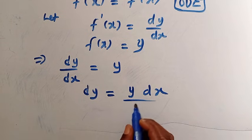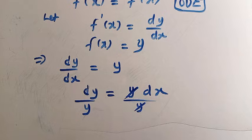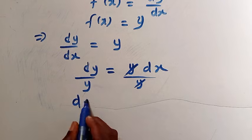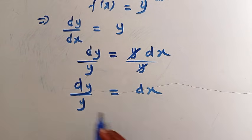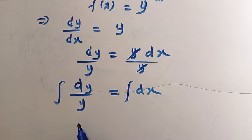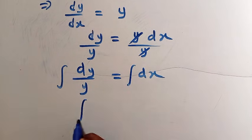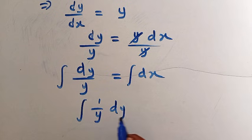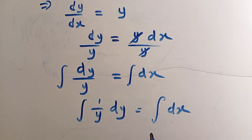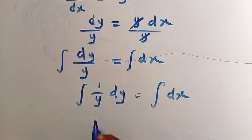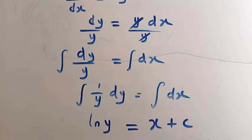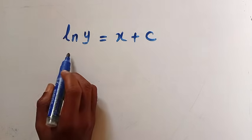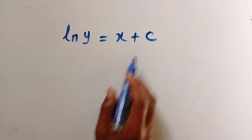Dividing both sides by y, we have y cancel y, and here we have dy divided by y equals dx. The next step: let's introduce the integral to both sides. So where we integrate 1 divided by y dy equals the integral of dx. Integral of 1 divided by y gives us ln y equals integrating dx, which gives us x plus a constant of integration. So we have ln y equals x plus c.